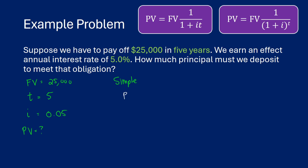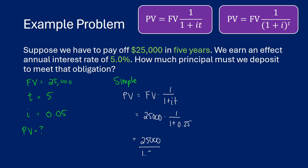For simple interest, we use our formula: PV equals future value times one over one plus i times t, which is 25,000 times one over one plus 0.25. So i times t is 0.05 times 5, which is 0.25. We're taking 25,000 and dividing it by 1.25 to get the present value, which is $20,000. So if we're earning 5% simple interest per year, we need $20,000 to reach $25,000.